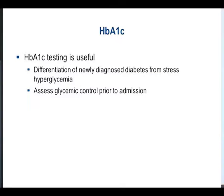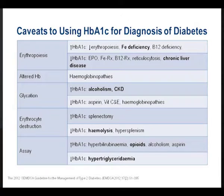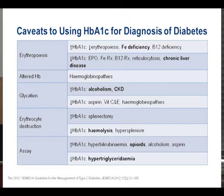HbA1c is a useful test — it makes the diagnosis of diabetes (HbA1c more than 6.5% is diagnostic) and tells us that for the past three months the patient had some form of dysglycemia. It's also a good indicator of pre-admission control. However, especially in gynaecology and obstetrics where bleeding disorders and multiple transfusions occur, any factor affecting haemoglobin will affect your HbA1c. So in a patient with a large PV bleed who had many transfusions, HbA1c will not be a reliable measurement.